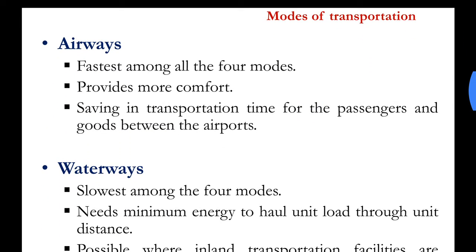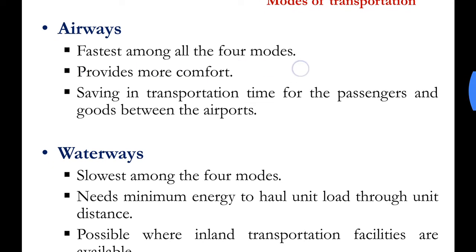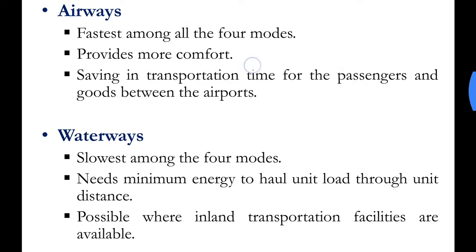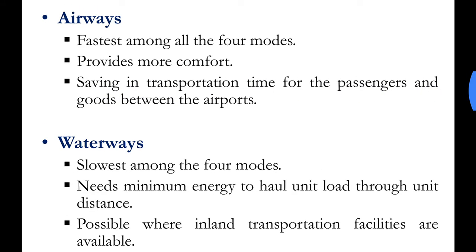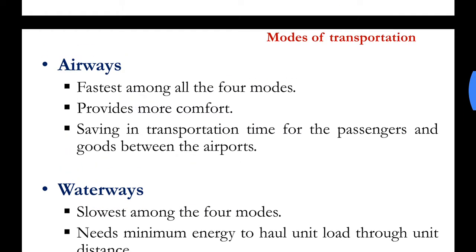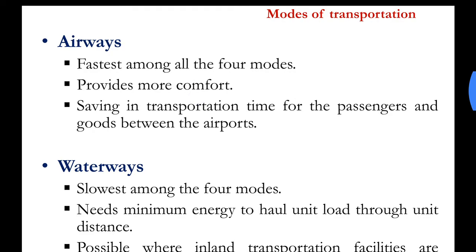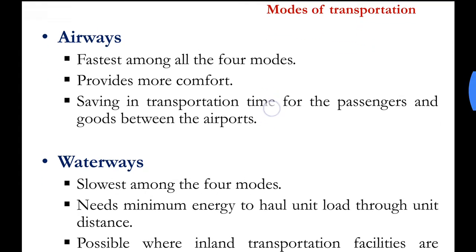The next mode is airways. It is the fastest among all four modes and provides the most comfort. There is a saving in transportation time for passengers and goods between airports. The major disadvantage is that airports are not located near homes, so you need to travel to the airport first, and the other disadvantage is the cost.